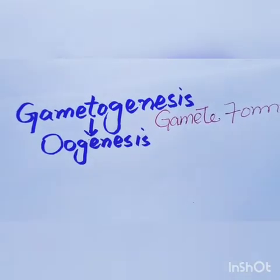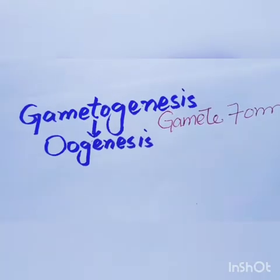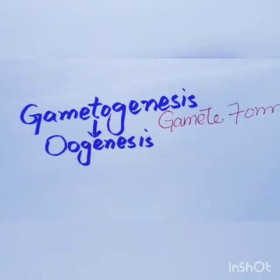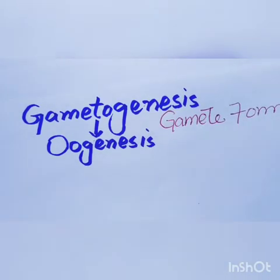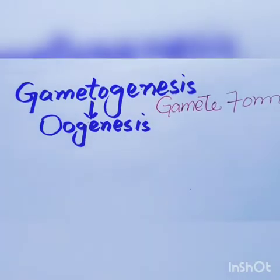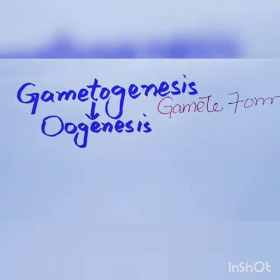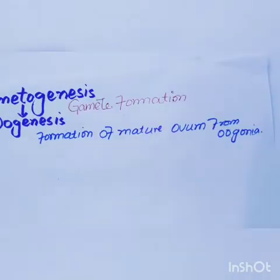Today my topic for discussion is oogenesis. In my last lecture I told you that gametogenesis is the formation of gametes — meaning sperm or ova. Gametogenesis is broadly divided into two processes: oogenesis and spermatogenesis. Today I am talking about oogenesis, which is the formation of mature ovum from the oogonia.